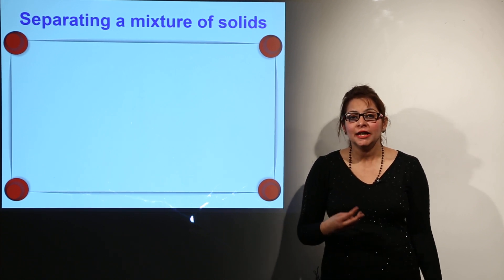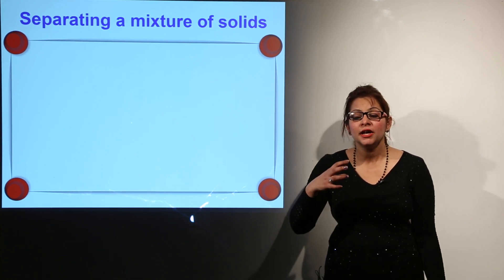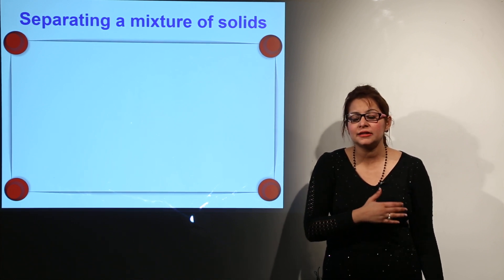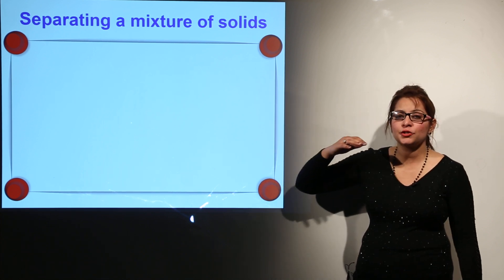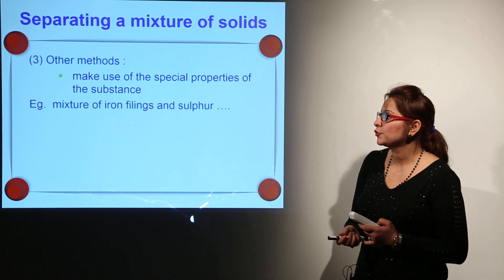We come across mixtures of two solids in which one solid gets to show some particular property but the other one does not show such property. So this is how we are going to separate the mixture of solids by using a particular property.